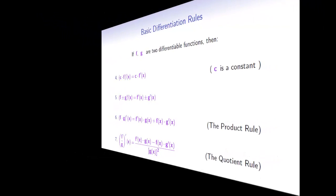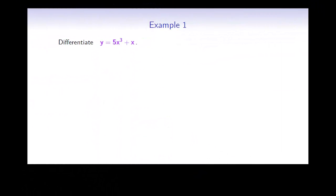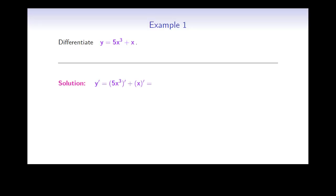Now let's try out a few examples. Differentiate the function y equals 5x cubed plus x. This function is the sum of two functions, and so the derivative y prime will be equal to the derivative of 5x cubed plus the derivative of x. According to the power rule, the derivative of x cubed is 3x squared, and the derivative of x is 1. So when we combine these results, we get 15x squared plus 1.